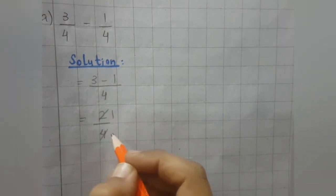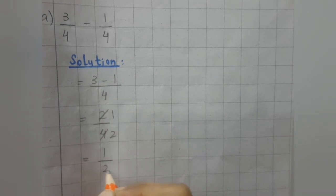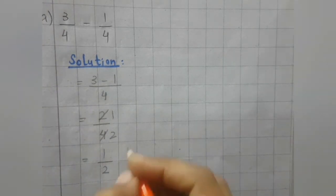2 ones are 2. 2 twos are 4. Now we will write in the simplest form 1 upon 2. This is the answer.